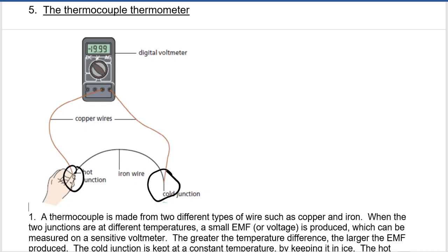Now the cold junction is always placed in ice, while the hot junction is the probe. So let's use this as the probe. The greater the temperature difference between the cold junction and the hot junction, the larger the EMF that's going to be produced on the digital voltmeter.